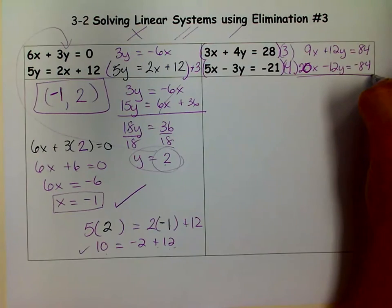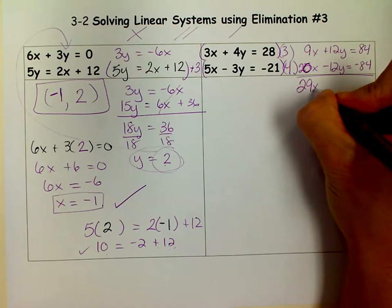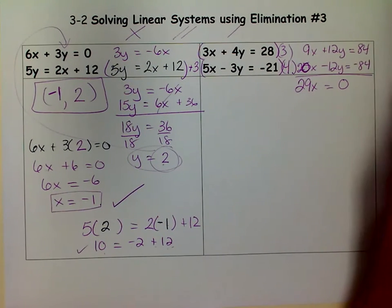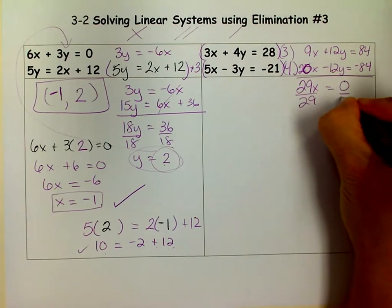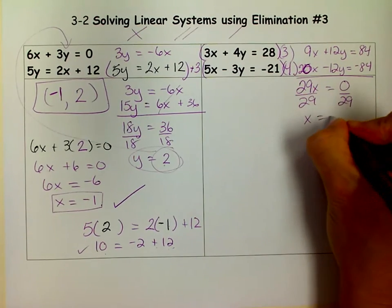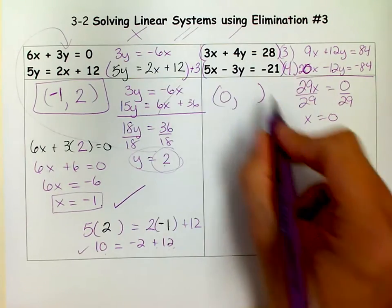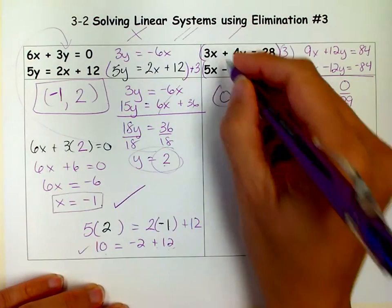So we're going to add these now. What do I get here? I get a 29X. Here they cancel out. And here they cancel out. Well the only thing times 29 that gets me 0 is 0. But if you wanted to divide by 29 you could. 0 divided by 29 is 0. So I know half my answer. I know I have one solution. It's not parallel or the same line.